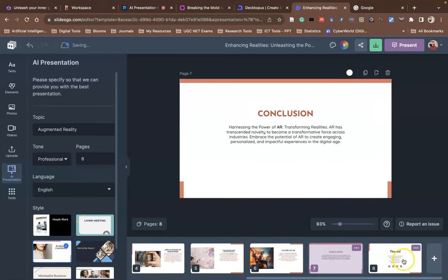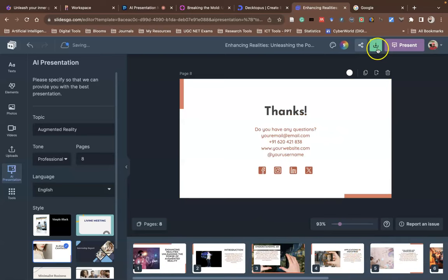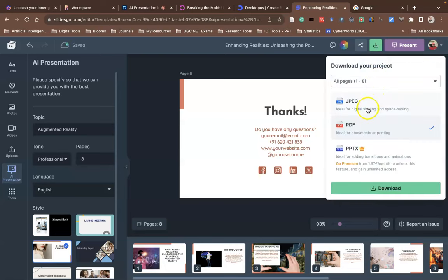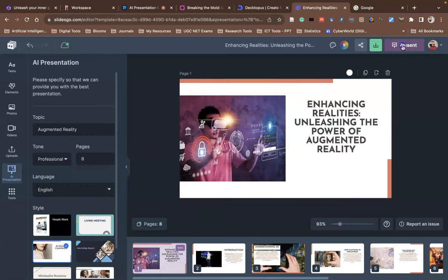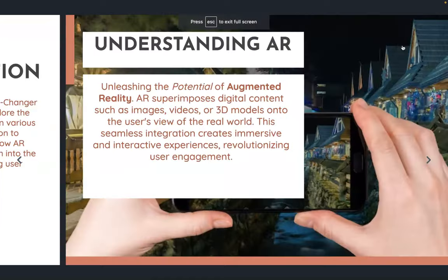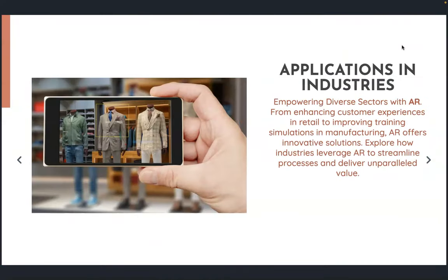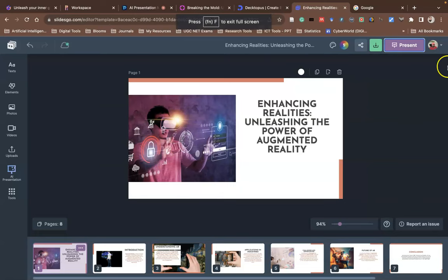Now you can see the slides — what wonderful slides! For downloading, they provide options like JPEG and PDF, though the PowerPoint download is a paid feature. You can also click Presentation Mode to view the full presentation. To come back to edit mode, press the Escape key. This is how you can use these AI presentation tools — I hope this video is useful for generating lots of PPTs with these AI tools.